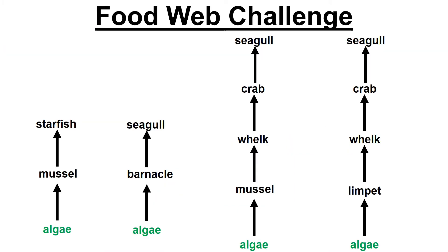Food web challenge — there are four food chains. Press pause, and I want you to turn that into a food web in which you only write each word once. So 'seagull', for example, appears in three food chains, but you would only have the word seagull once in your food web. Press pause and do that.